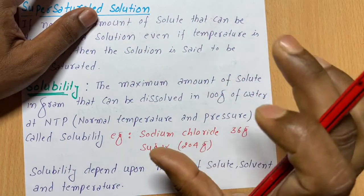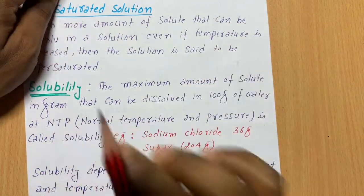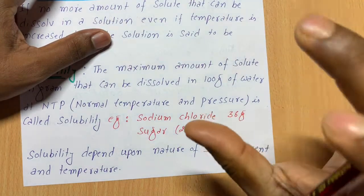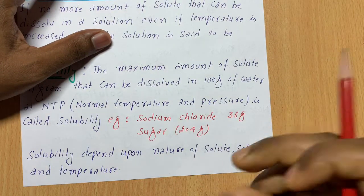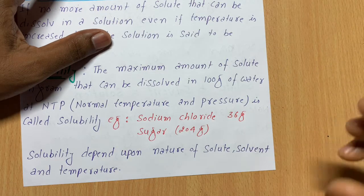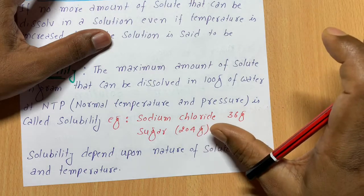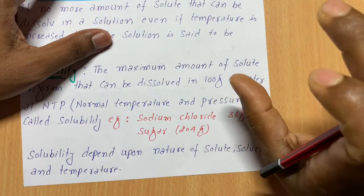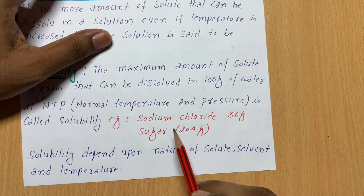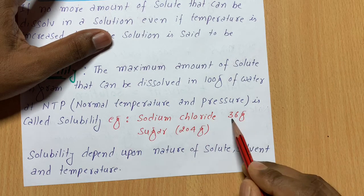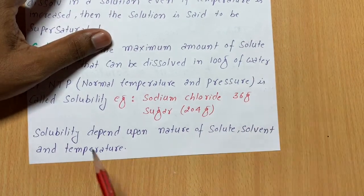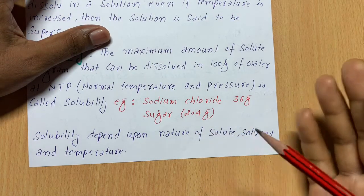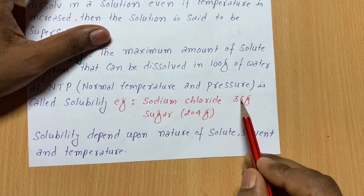For example, sodium chloride (NaCl — common salt) has a solubility of 36 grams per 100 grams of water at room temperature (25°C). Sugar, on the other hand, can dissolve up to 204 grams in 100 grams of water at room temperature. So solubility varies — salt can be very low while sugar can be very high.